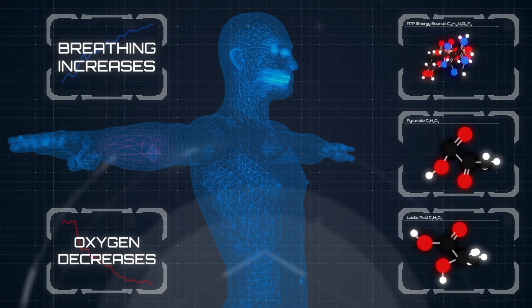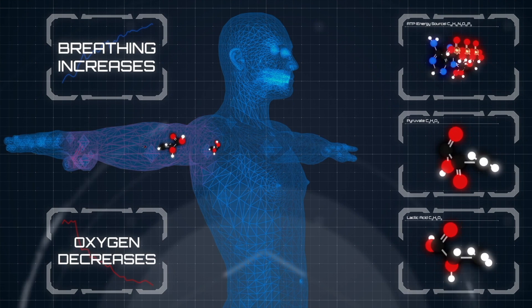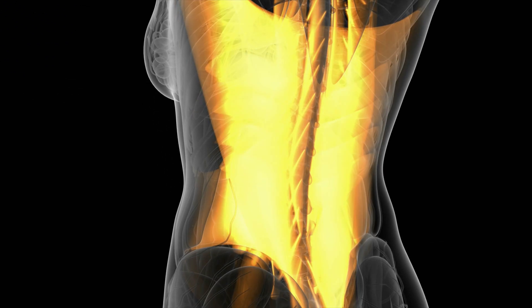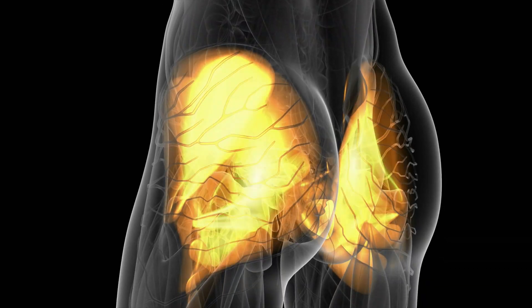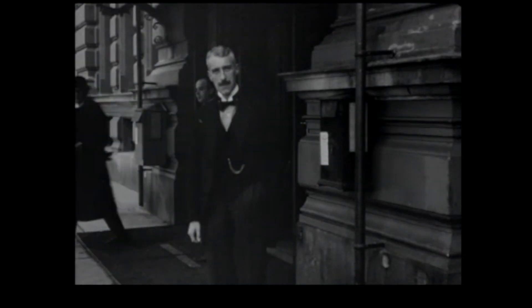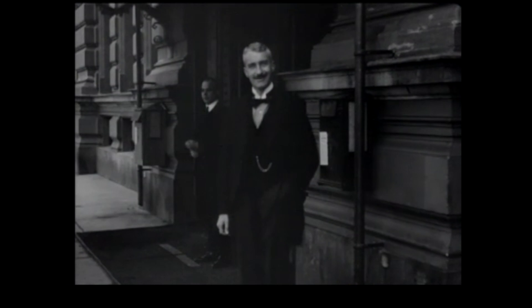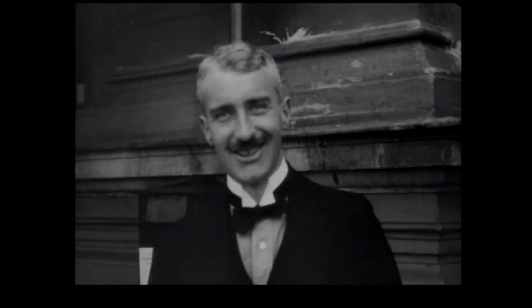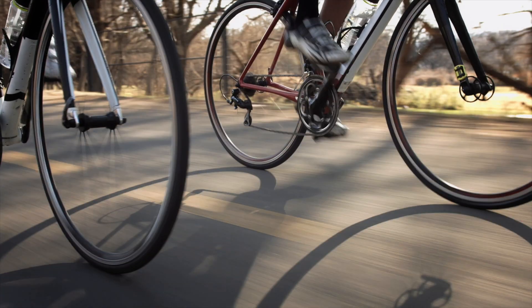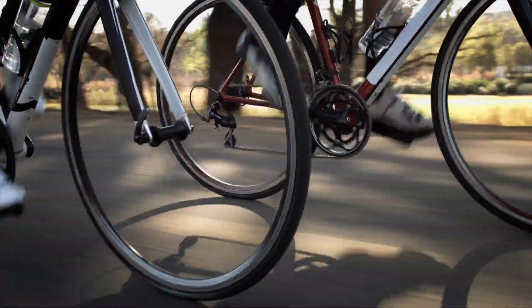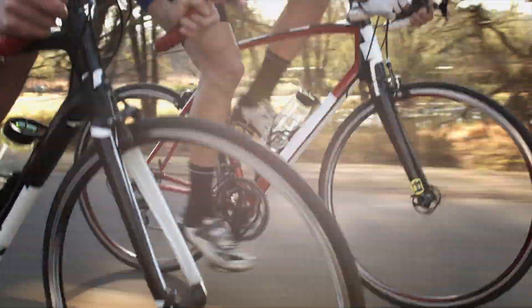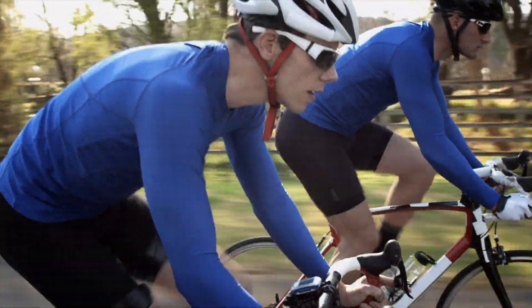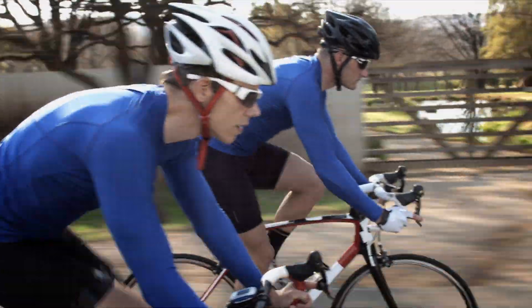Prior to Hill's studies, doctors and scientists believed that all muscle contractions were only aerobic in nature, meaning muscles needed oxygen to contract. In 1920, Hill started research on isometric muscle contractions, and he was able to demonstrate that heat was produced during muscle contraction, relaxation, and recovery. He demonstrated that oxygen is needed only for the recovery phase of the muscle, not the contraction phase.